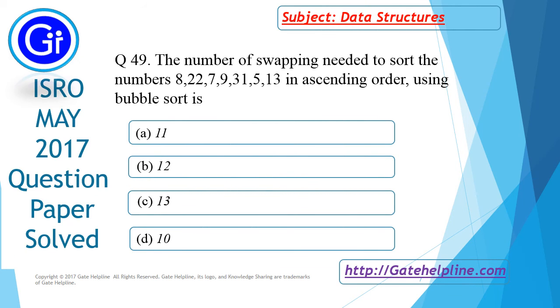So as per our discussion, answer to this question is option D, that is 10 number of swappings needed to sort the numbers in ascending order using bubble sort.